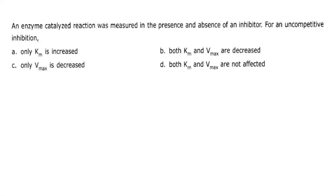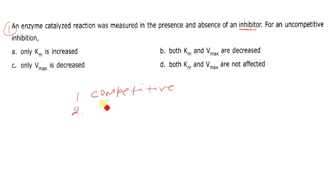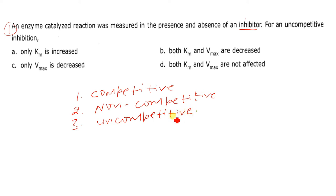The first question involves an enzyme-catalyzed reaction measured in the presence and absence of an inhibitor for uncompetitive inhibition. There are three types of inhibitors: competitive inhibition, where inhibitors bind competitively with the enzyme.